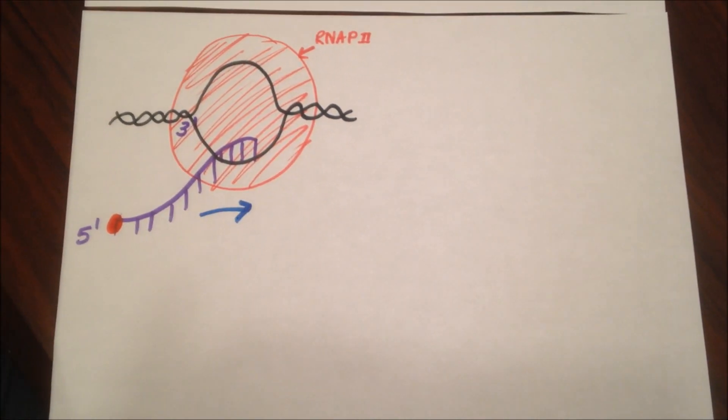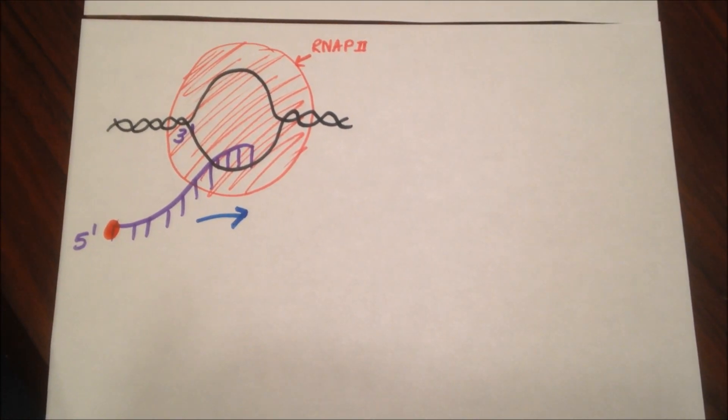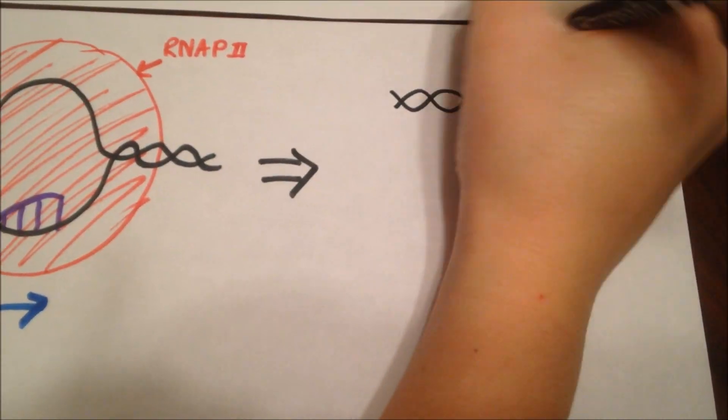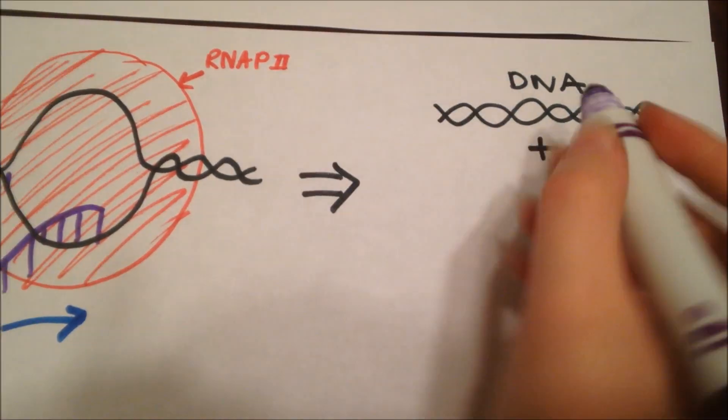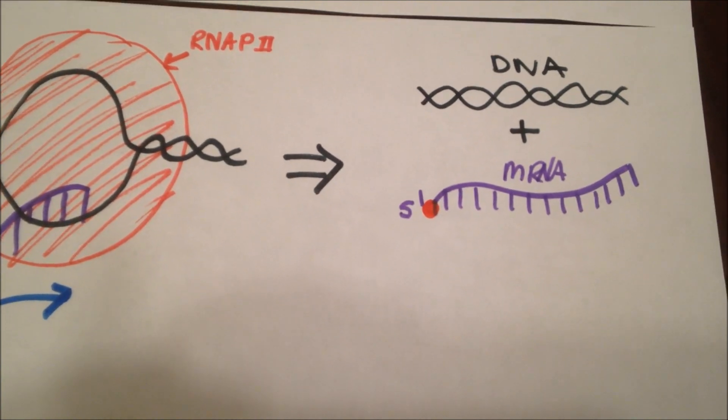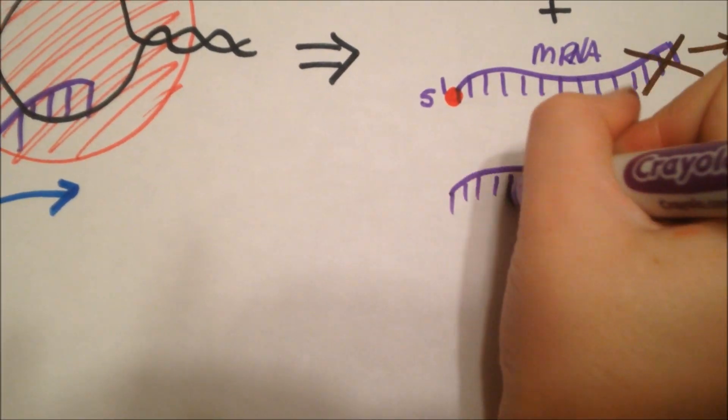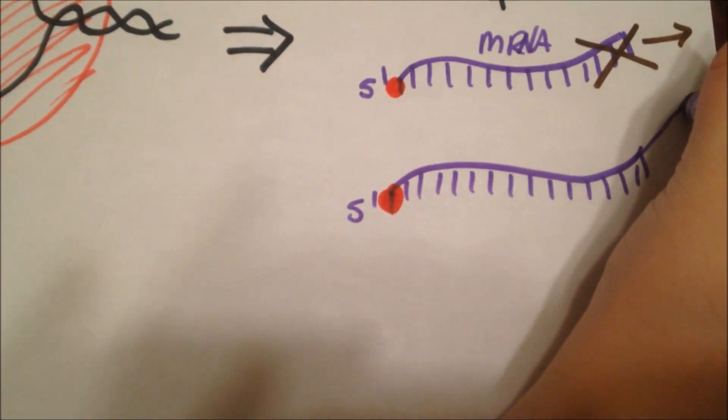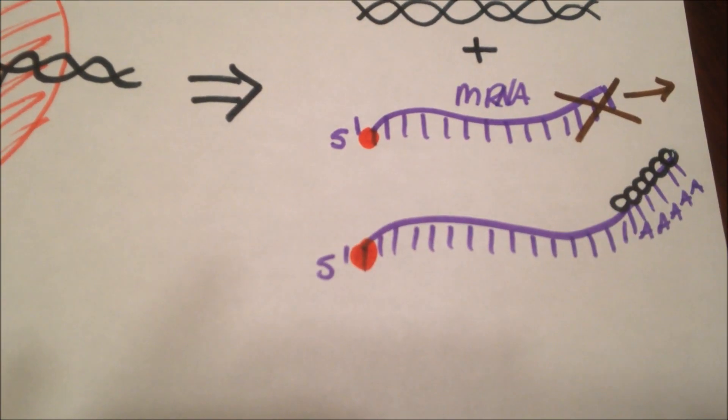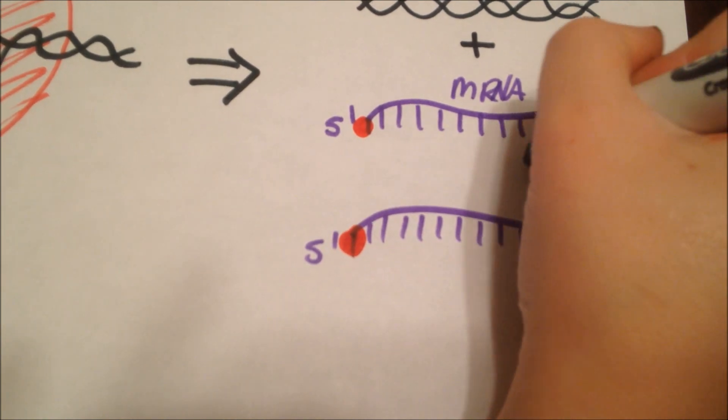Now, as RNAP2 approaches the end of the transcription unit at the point where a termination code is, TF2D unbinds from DNA and RNAP2 and releases the unmature mRNA sequence. After termination, the 3' end gets cleaved off, and then a sequence of adenine gets added to form a poly-A tail, and then proteins get added to the poly-A tail to protect it from being degraded.